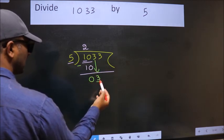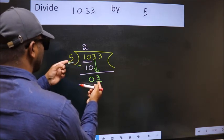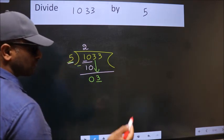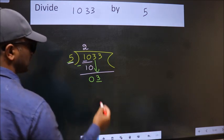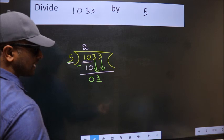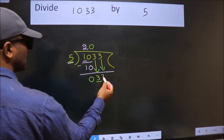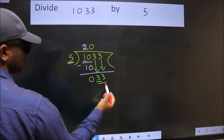Now here we have 3, here 5. 3 is smaller than 5, so we should bring down the second number. And the rule to bring down the second number is put 0 here. Then only we can bring this number down. So 33.